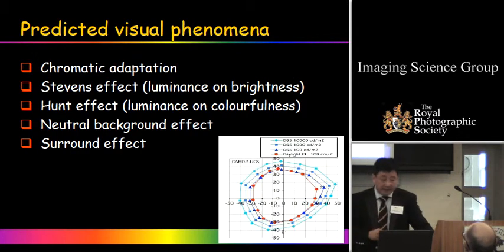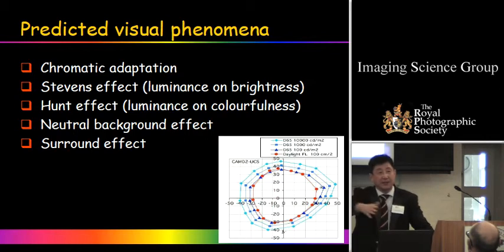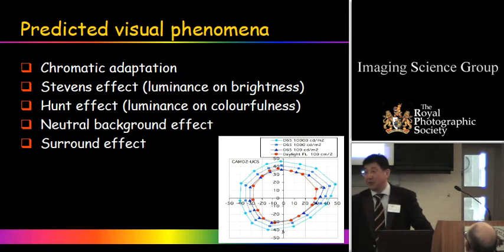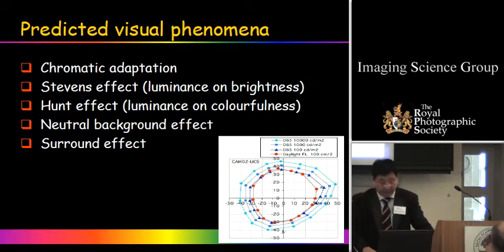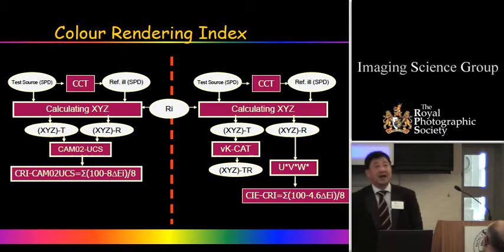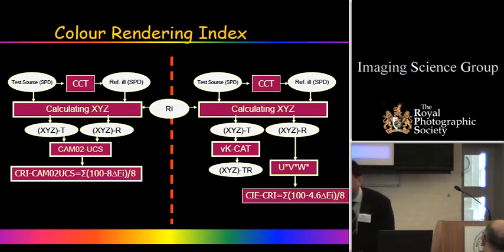The model predicts different phenomena: chromatic adaptation, changes in luminance — Stevens effect, luminance and brightness — Hunt effect. We have the distinguished Professor Hunt sitting right there — for many years everyone has mentioned the Hunt effect. Neutral background effect, bright and dark surrounding effects. For this year and the last three years, the hottest topic is the color rendering index.